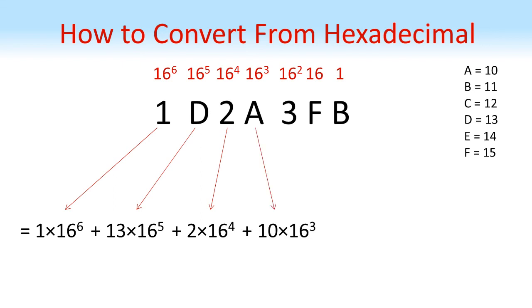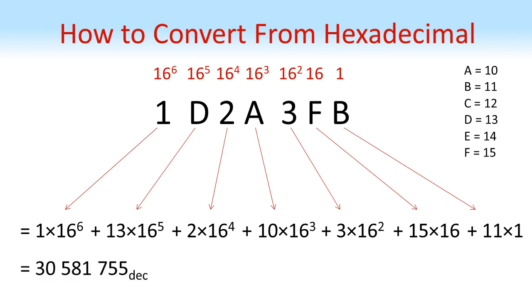10 lots of 16 cubed, 3 lots of 16 squared, 15 lots of 16 and 11 lots of 1. Completing this sum gives us a decimal number of 30,581,755.